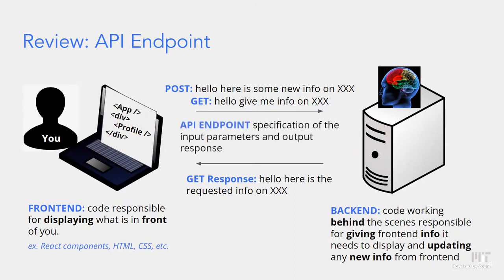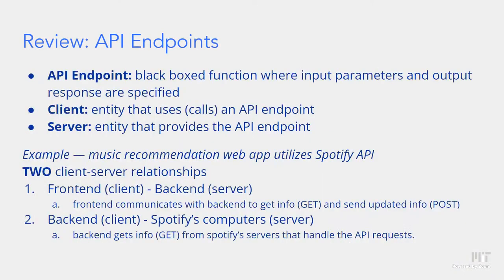How does the front end specify what kind of information it wants? This is defined by an API endpoint, which specifies what kind of input the endpoint takes and the output it should send back. You can think of an API endpoint as a black box function where the input parameters and output responses are specified. In the context of API endpoints, we use the terms client and server — the client is the entity that uses the API endpoint, and the server is the entity that provides and defines it.